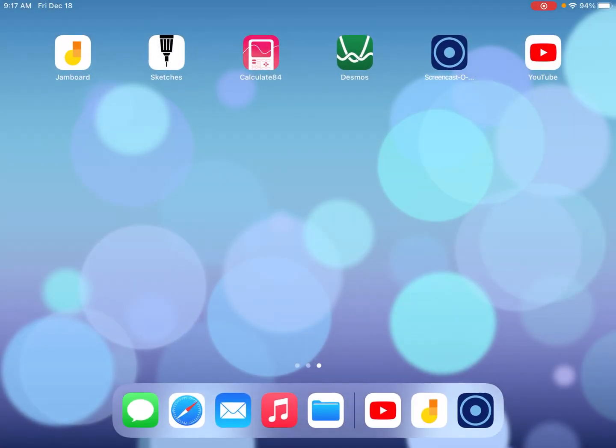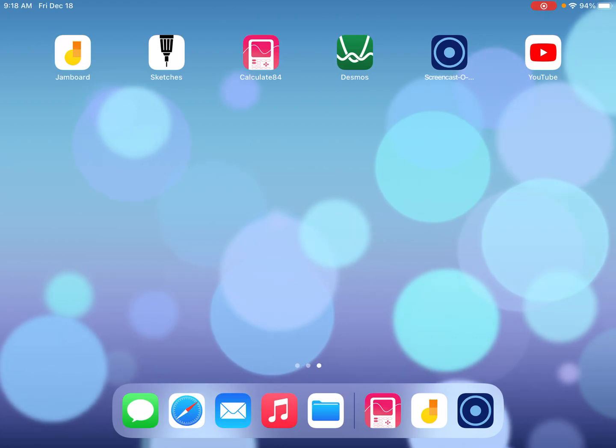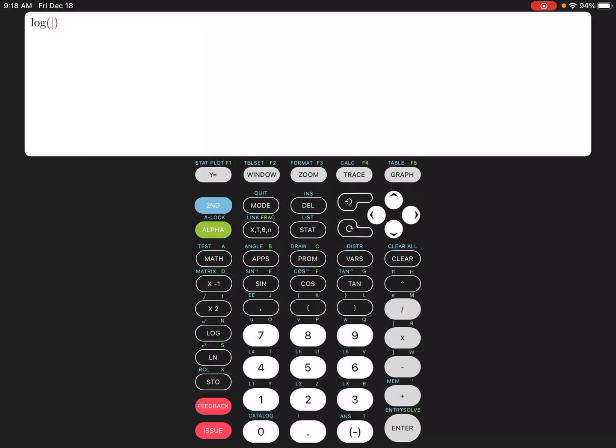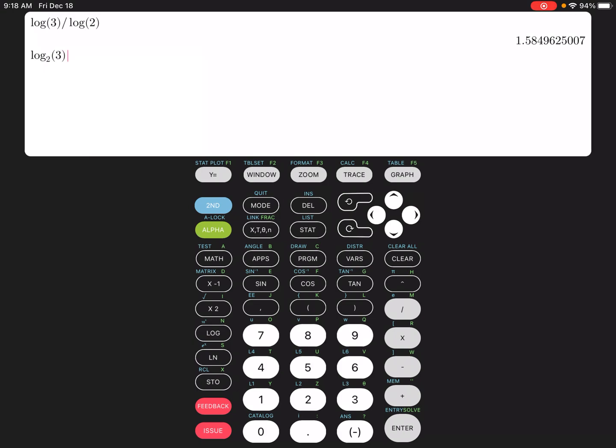So I'm going to show you if you're using, let's clear this. So if you're using the Calculate84 app or you have a TI-84 calculator, so we can type this in using log of 3 divided by log of 2, and hit enter, and then that gives us a value. If you have a TI-84 calculator, there actually is a way to change the base, and it is, I've got to remember this, I think it is alpha window? Yes. So if you hit the green alpha and then the window button, and then scroll down to where it says log base and hit enter. So now I'm going to put log base 2 of 3. So that was the problem that we were looking at. If I hit enter, you'll notice that those values are the same. So that's how change of base works.